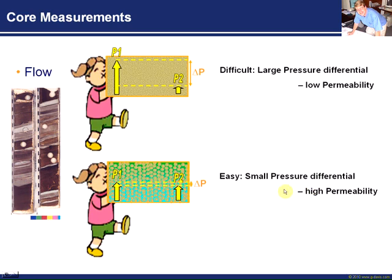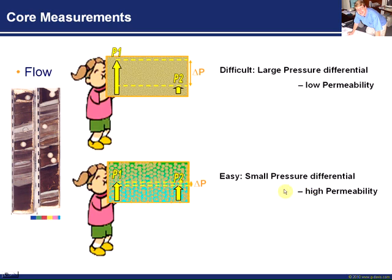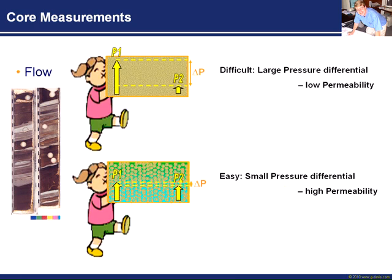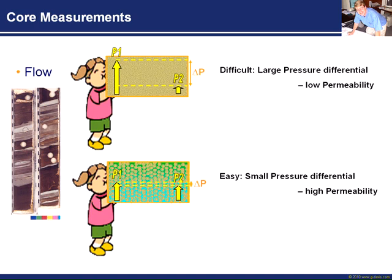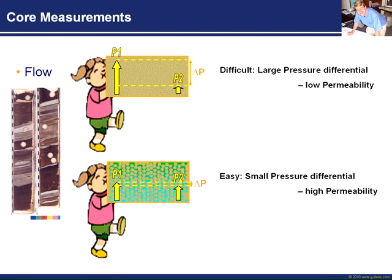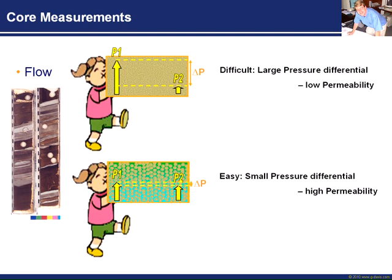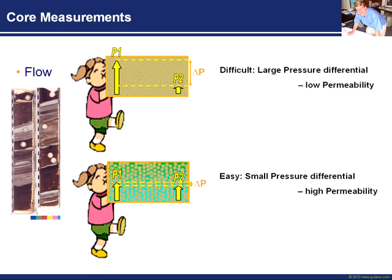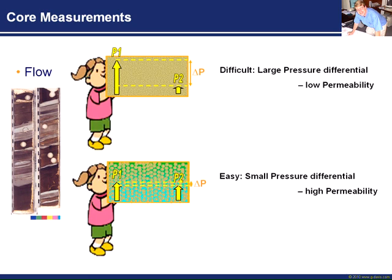If you'd like to Google Darcy, there's an equation there that you can use to calculate permeability from cross-sectional area and pressure differentials, but this is the concept that I just want to get across at the moment. Easy is high permeability, and this hard-working stuff up here is low permeability.